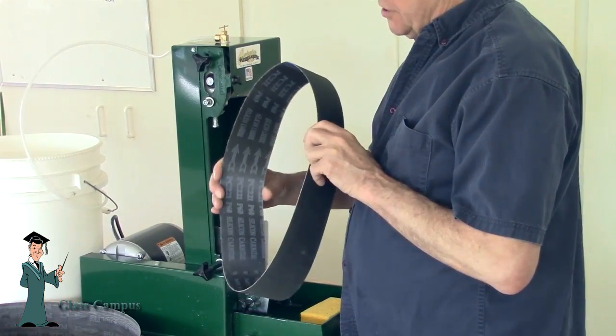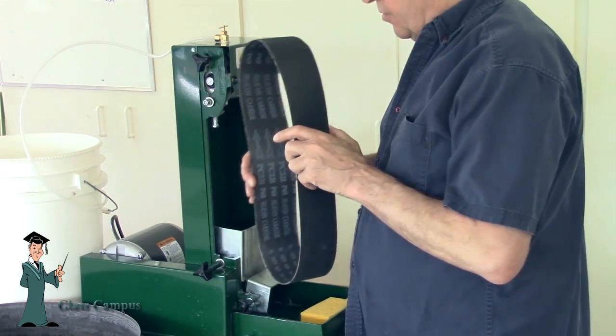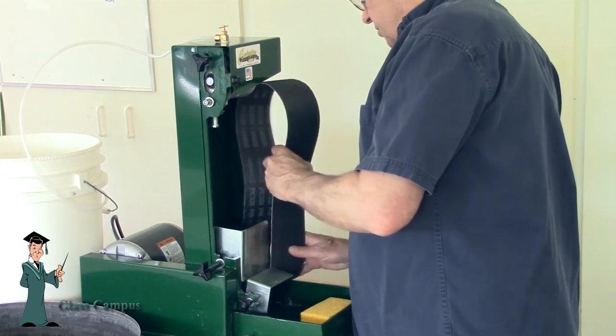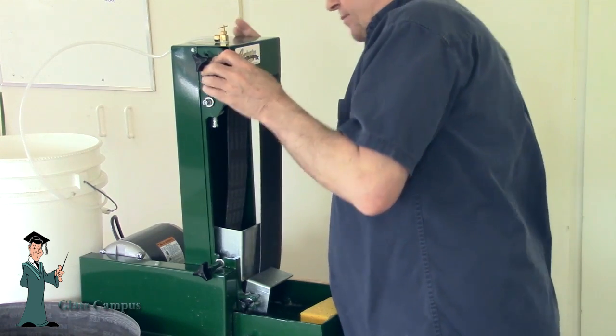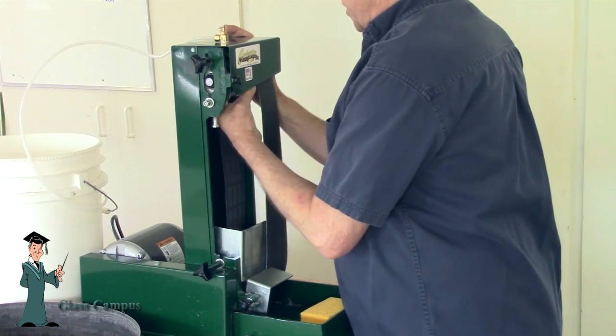Take care that you check the direction, the arrows on the belt, so that you're putting it on in the direction it was designed to be used. If you don't, you'll just produce excessively rapid wear on the belt and you'll end up burning through a lot of belts that you shouldn't have to.